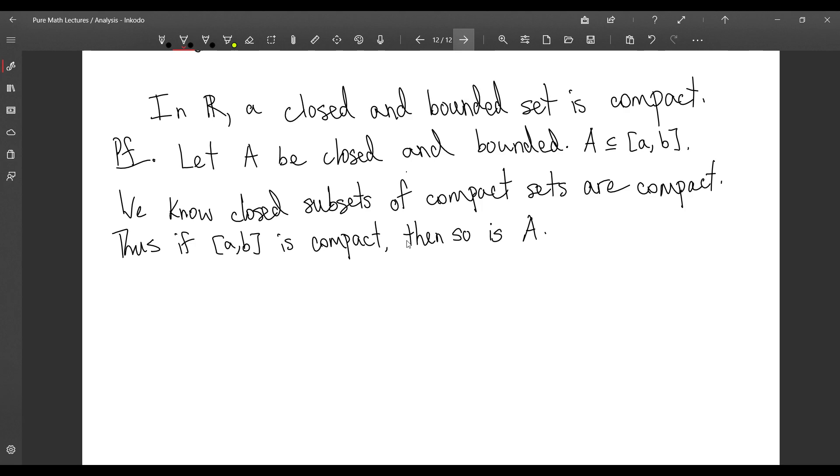So, we're going to start with an open cover of A to B. So, let's say that the O alpha are our open sets that are covering A to B. Now, suppose there is no finite subcover. Basically, suppose that this set is not compact.